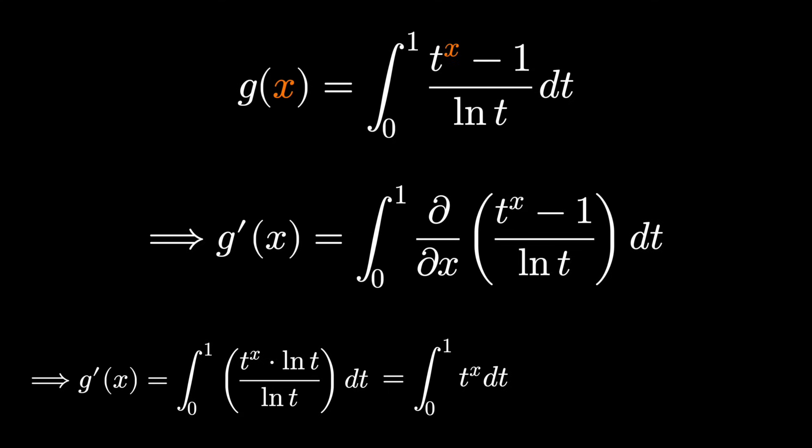Now we have the derivative of our defined function as the definite integral from 0 to 1, but we're integrating with respect to t. Again, we can do this just using the fundamental theorem of calculus, applying the reverse power rule, add 1 to the power, divide by the new power, and substitute these variables.